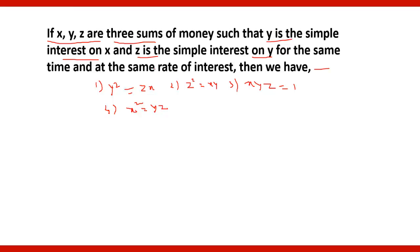Here we know that Y is the simple interest on X. Since simple interest is equal to PRT upon 100, Y will be equal to PRT, where P is X here, so X RT upon 100. If you take X to the other side, you will get Y by X is equal to RT upon 100.